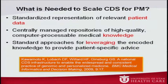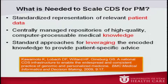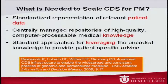The question becomes: what's needed to scale decision support for personalized medicine? We published a paper on this, and I'm particularly interested because I co-chaired the decision support work group for HL7, the standard-setting body for health IT. There are at least three main components: first, you need to standardize the representation of relevant patient data — both clinical and genetic. Second, you need centrally managed repositories of high-quality computer-processable medical knowledge. Third, you need standard approaches for leveraging this knowledge to provide patient-specific advice.